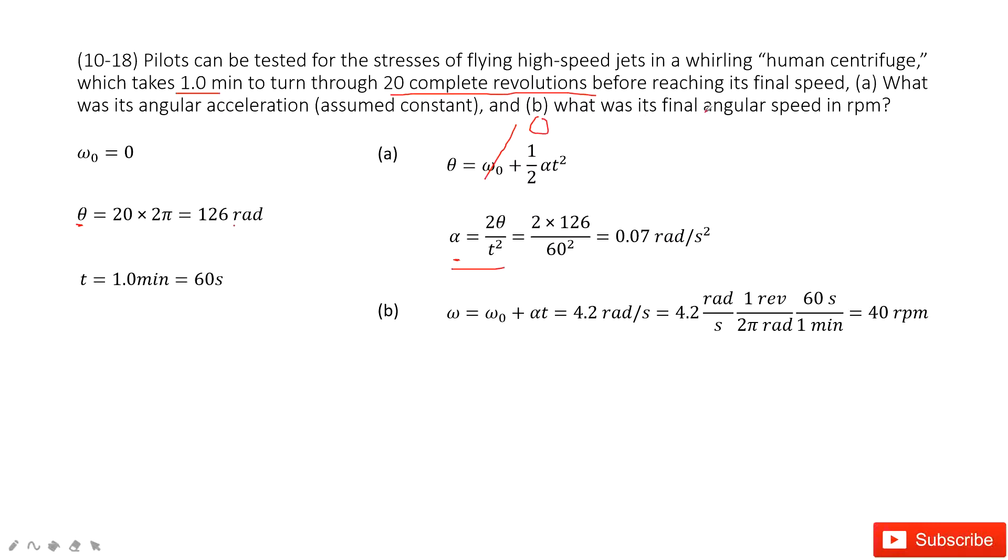The second one is asking you to find final angular speed. Final angular speed is, you can see now you know the angular acceleration, initial angular velocity and time t. So this one is super easy. You can get it is 4.2 radians per second converted to units of revolutions per minute. Thank you.